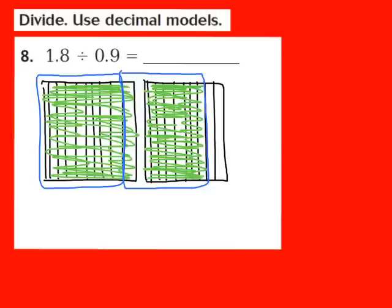The number of same size groups turns out to be the quotient. We have 1, 2 groups of our 9 tenths, so we know that our quotient is going to be the whole number 2. When I divide 1 and 8 tenths by 9 tenths, our quotient turns out to be the whole number 2.